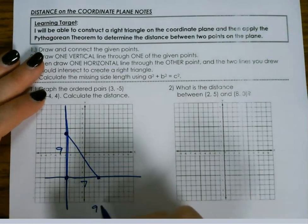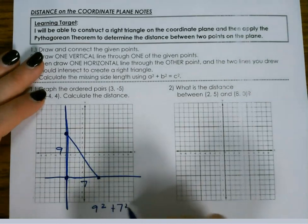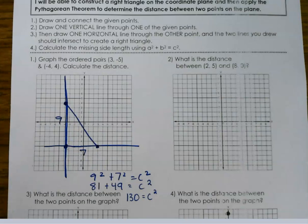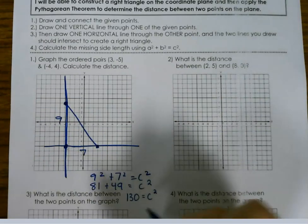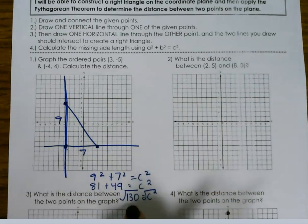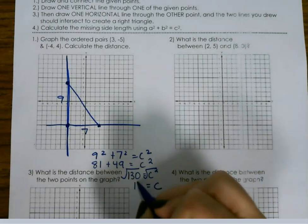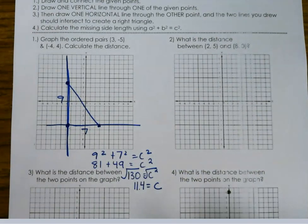So then we just use a squared plus b squared equals c squared to calculate for c. So that would be 81 plus 49, which is 130. When we do the square root of this, 130 is not a perfect square, so it's going to give us a decimal of approximately 11.4.